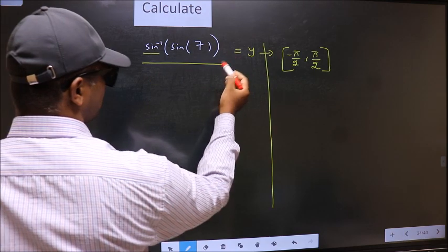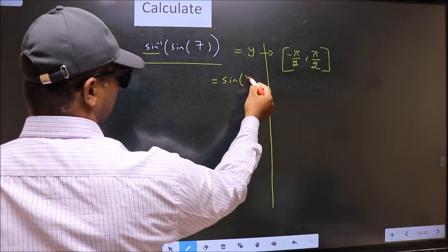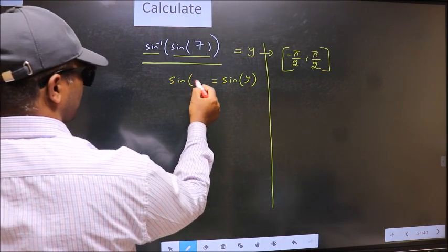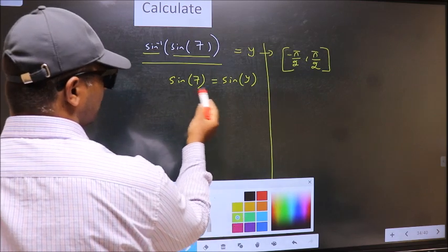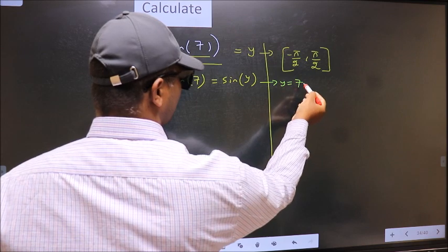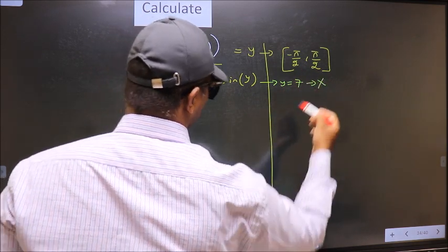Shift sin inverse to the other side. It will become sin y, and this no change. Now comparing both sides, we get y to be 7. Does 7 lie in this interval? No. So reject this answer.